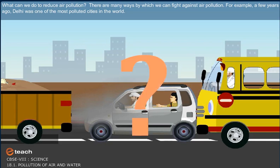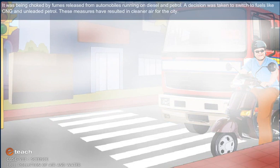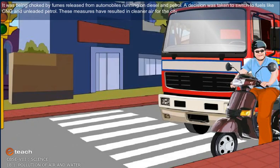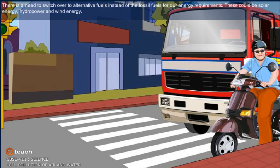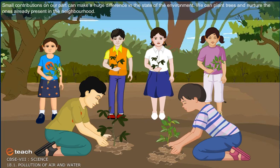What can we do to reduce air pollution? A few years ago, Delhi was one of the most polluted cities in the world, being choked by fumes from automobiles running on diesel and petrol. A decision was taken to switch to fuels like CNG and unleaded petrol, and these measures have resulted in cleaner air for the city. There is a need to switch over to alternative fuels — solar energy, hydropower and wind energy — instead of fossil fuels. We can also plant trees and nurture the ones already present in the neighborhood.